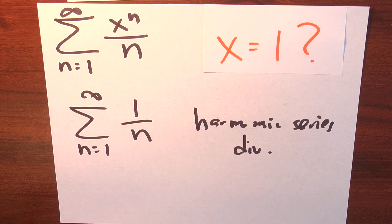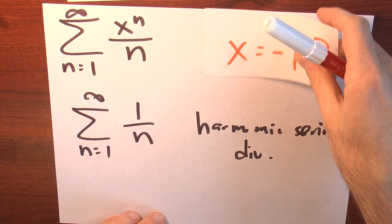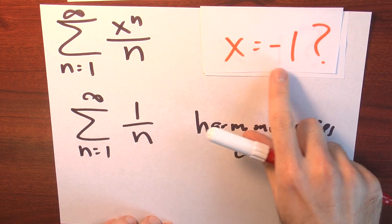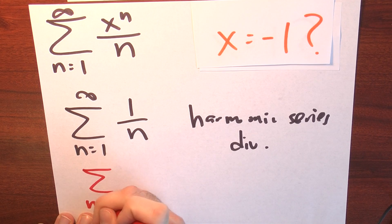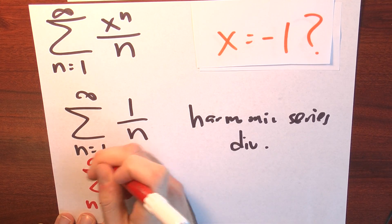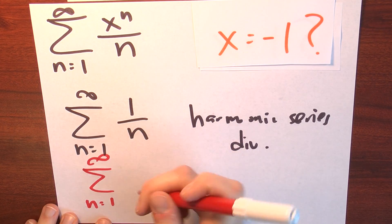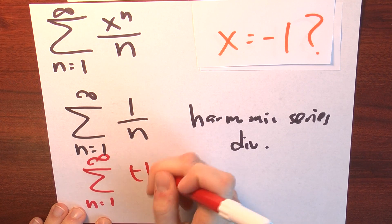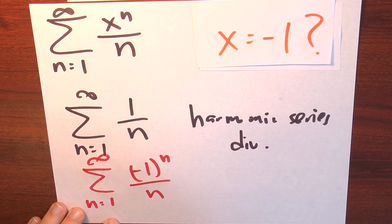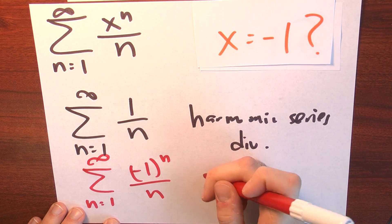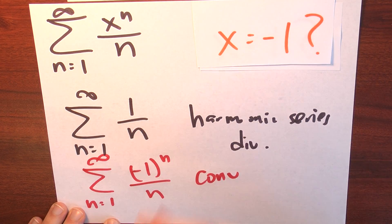What about x equals negative 1? Plugging in minus 1, I get the sum from n equals 1 to infinity of minus 1 to the n over n. That's the alternating harmonic series, and that converges — albeit conditionally.